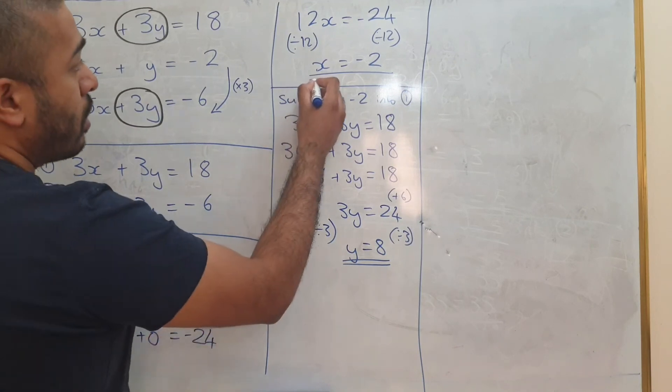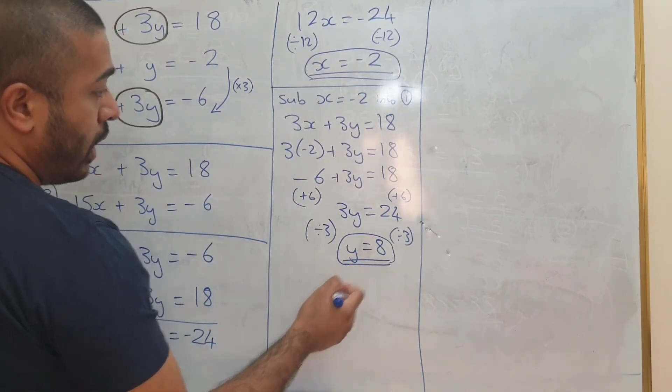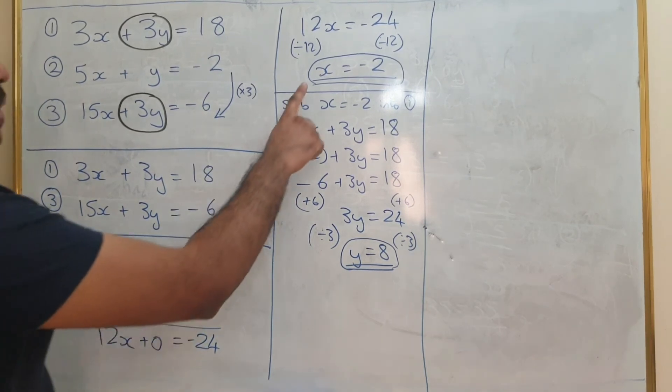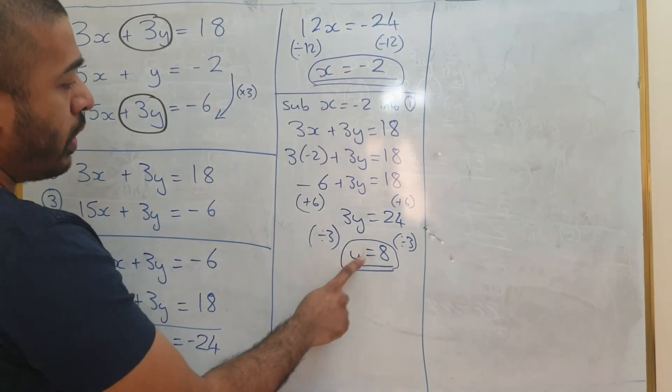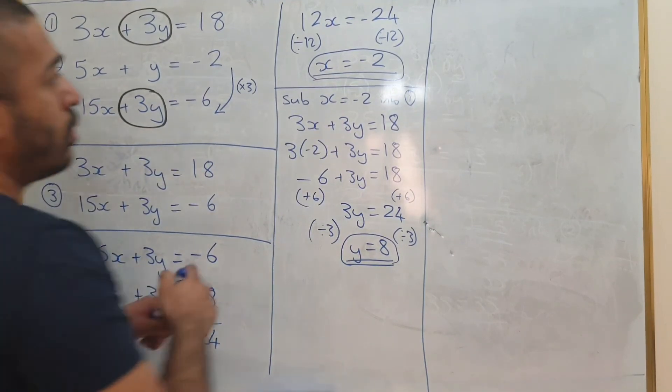Now I've got my two answers. So x equals minus 2 and y equals 8. Now that I've got my two answers I'm going to substitute these two back into equation number 2.